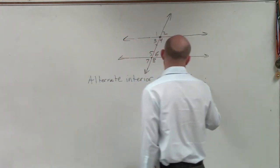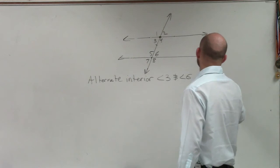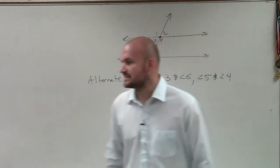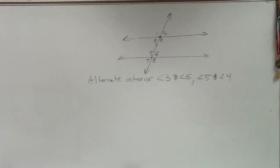Angle 6, and then you could also say angle 5 and angle 4. And those are your two examples of alternate interior angles.